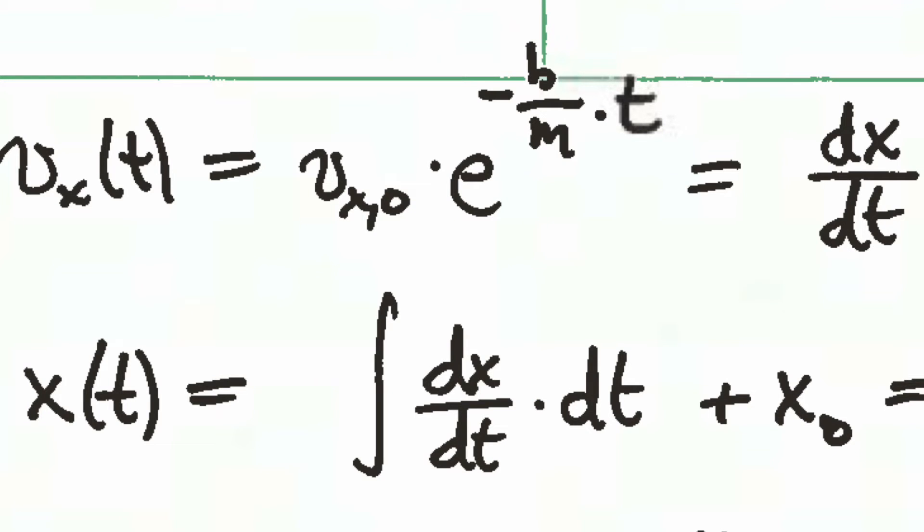Okay, so we have the velocity as a function of time. We see it's this initial value times an exponential function. And now we'd like to use that solution to solve for the position x of t as a function of time. And so because vx of t is the time derivative of x with respect to time, we can integrate vx of t once, as shown on the bottom line there, to get x of t. You see that we need to incorporate not just the integral but also the initial value x0.